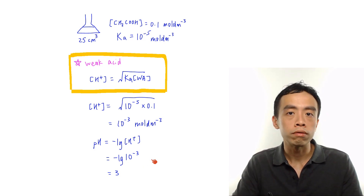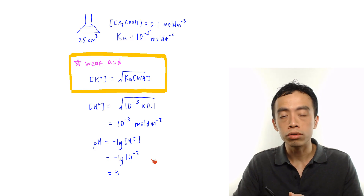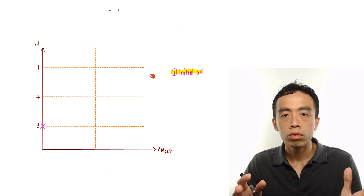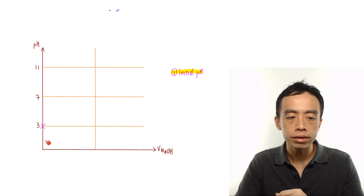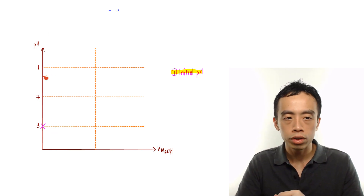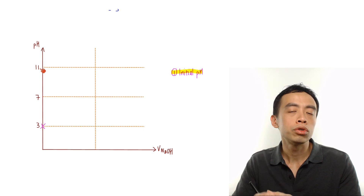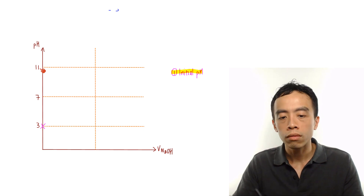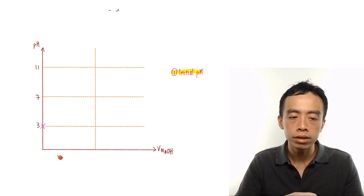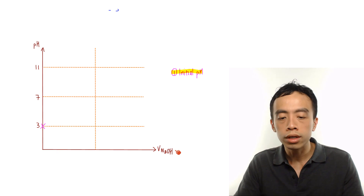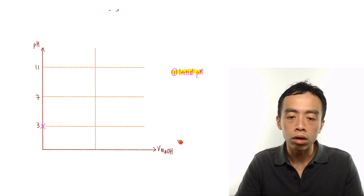Then finding pH is straightforward. pH equals minus log of H⁺ concentration, so it will be minus log 10 to the power of minus 3, which works out to be pH equals 3. So what we have now is the pH of this weak acid before the titration, and we can put it on the titration curve. The y-axis will be pH, and the x-axis will be the volume of the titrant, which in this case will be the volume of NaOH.